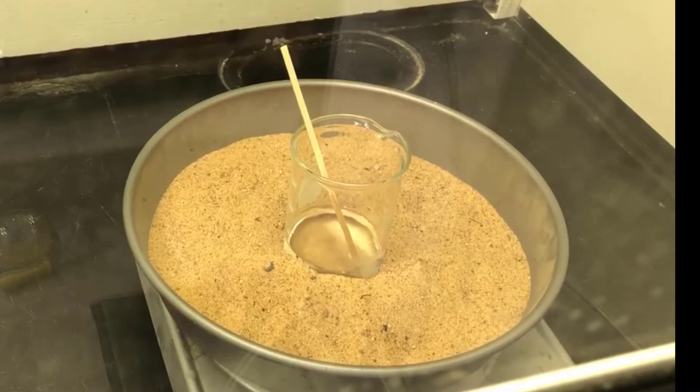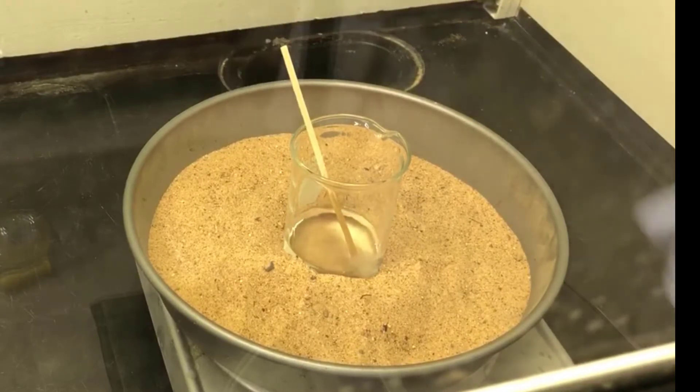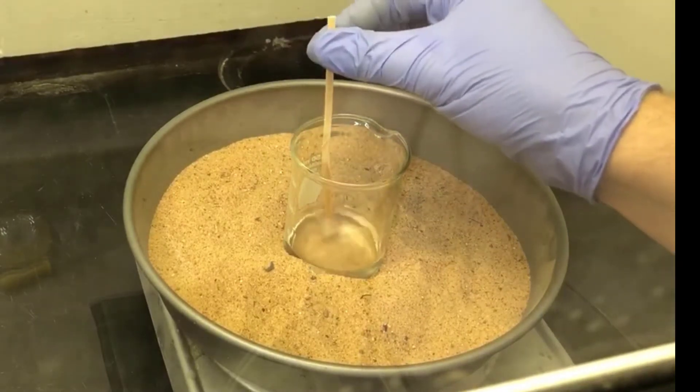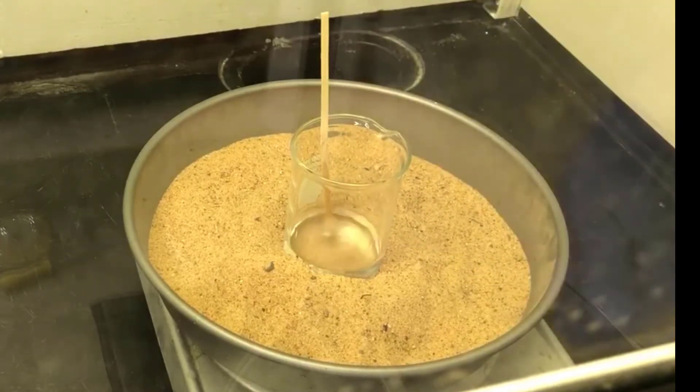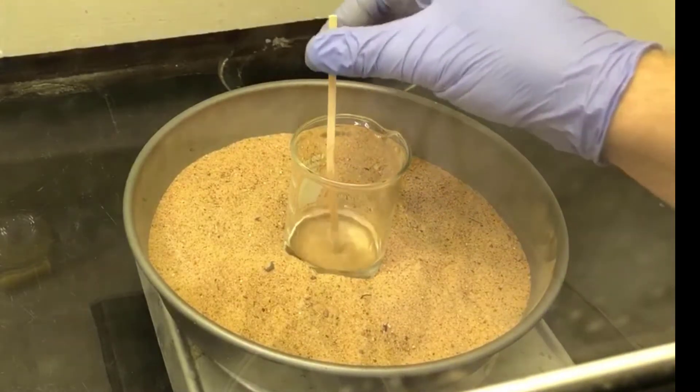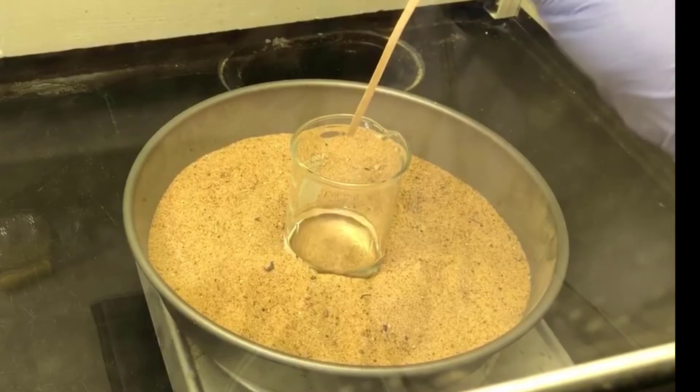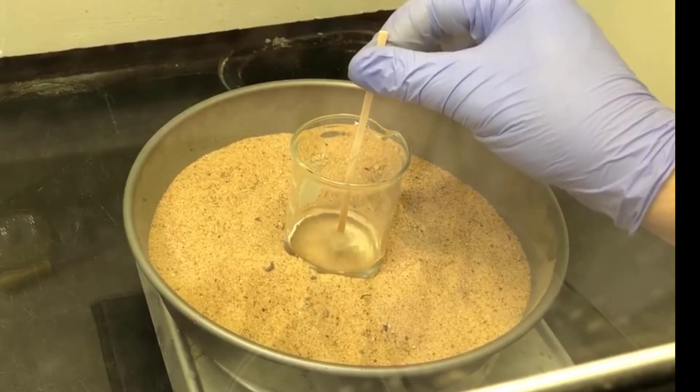The stick functions as a pore surface for bubbles to form on. It helps smooth out the boiling and keeps the solution from becoming superheated and bumping. It functions in the same way as a boiling chip, if you've ever used one of those. It's just a lot easier to remove a stick at the end. When I remove the stick, you can see the bubbling stops, and then when I put the stick back in, it resumes.